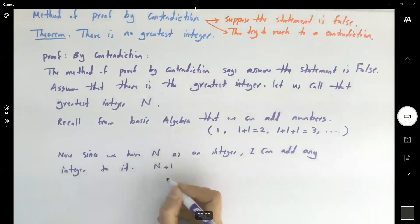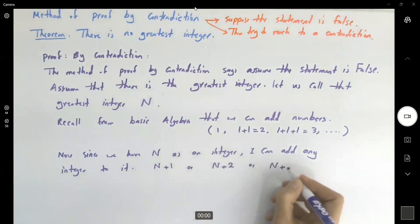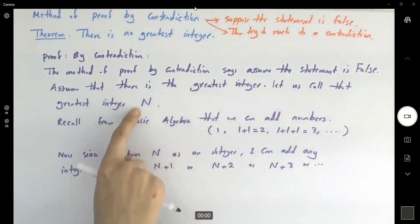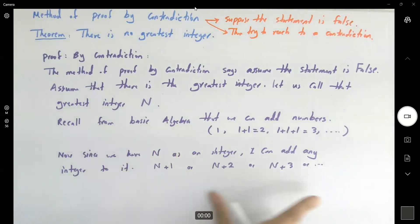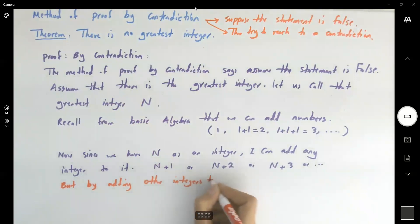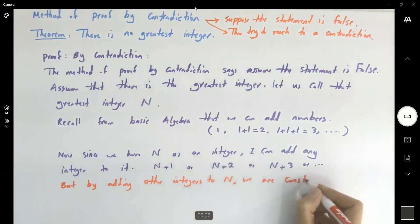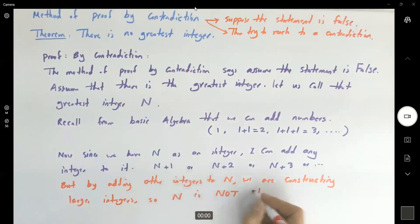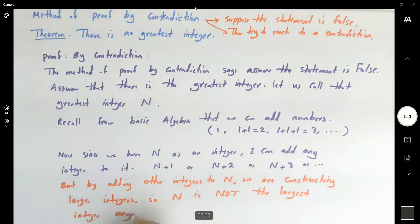For example, you can write N plus one, or add two to it, or three, or any other number. I assumed that N is the greatest integer, but by adding one, two, three, or any other integers, I'm creating integers that are larger than N. This is the contradiction — by adding other integers to N, we are constructing larger integers. So N is not the largest integer anymore, and this is our contradiction.